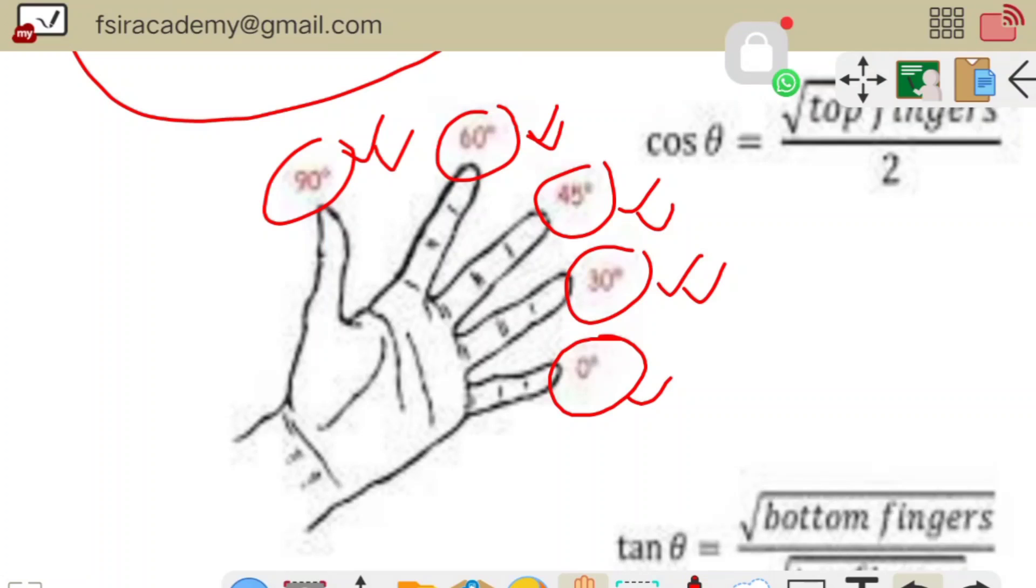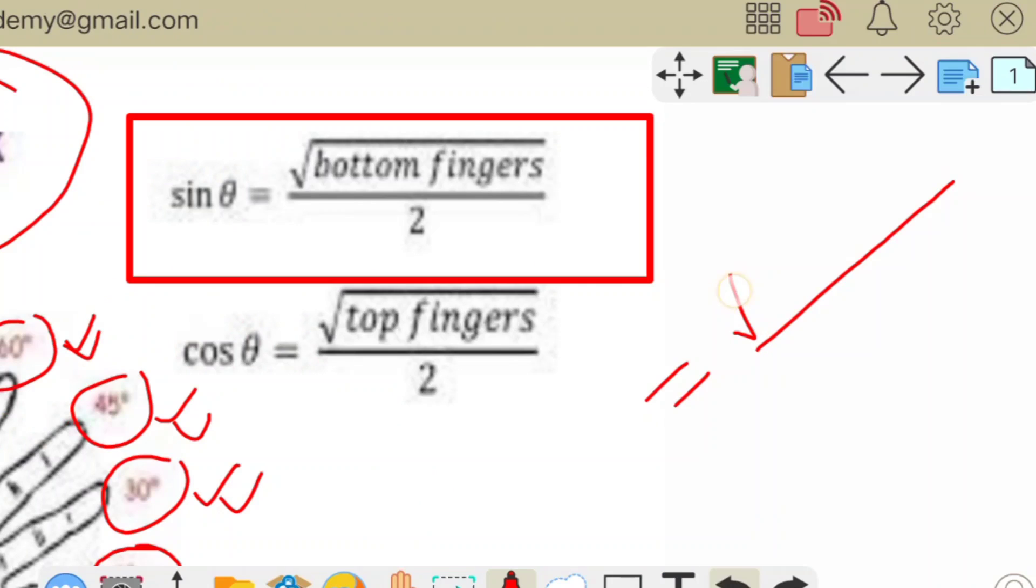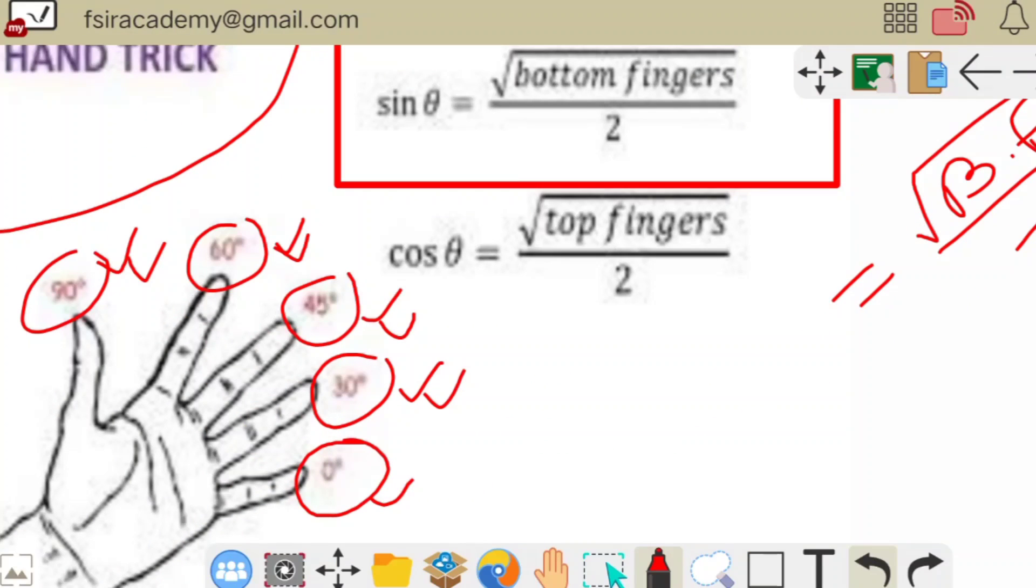First, we have to find out the value of sine table. So for sine table, the formula is on the screen. You just write down sine theta equal to root of bottom finger divided by two. So we have to find out the value of sine table.